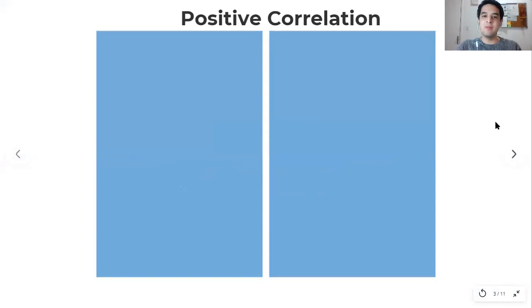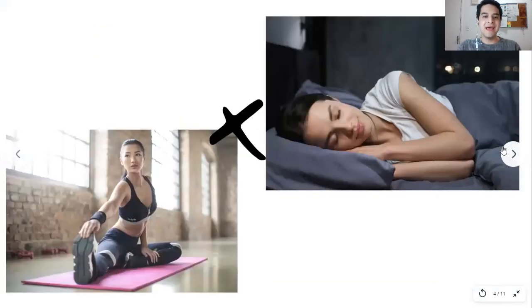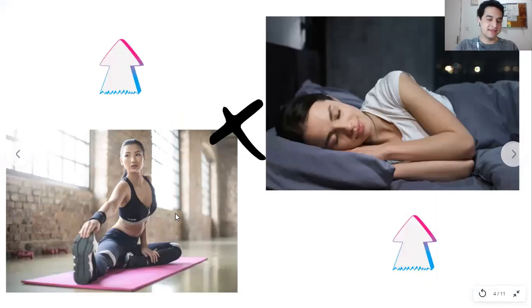When we have a positive correlation, one variable goes up and the other also goes up. One example is that levels of exercise during the week are positively correlated with better sleep quality.